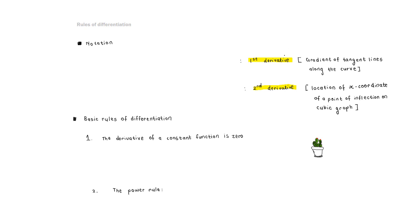The first derivative gives you the gradient of tangent lines at any point along your original graph. You can denote the first derivative by writing y prime, f prime of x, dy by dx, d by dx of f of x, or just dx of y. Note that the notation dy by dx does not mean dy divided by dx — it is not a division. It's an operation meaning the derivative of function y with respect to the variable x.